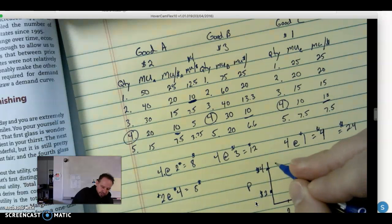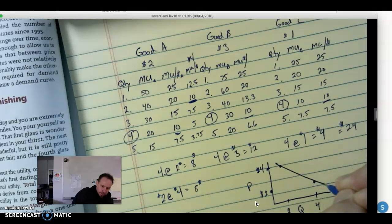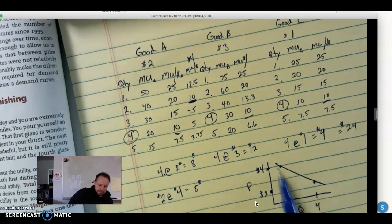So in essence, there is our simplified demand curve for good A - two points on it. And that's what you would need to do. Hope that helps, hope that makes sense.